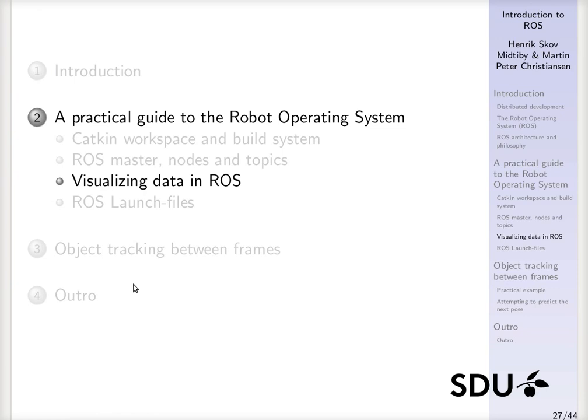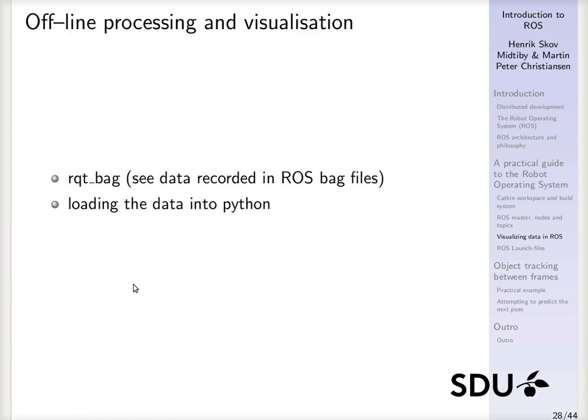The next thing to deal with is how to visualize data in ROS. At some point it will make sense to record ROS bags, so we can see what actually happened after it had happened, after we have done the experiment. We can inspect a ROS bag using this rqt_bag command, and we can also try to load data from a ROS bag into Python directly.